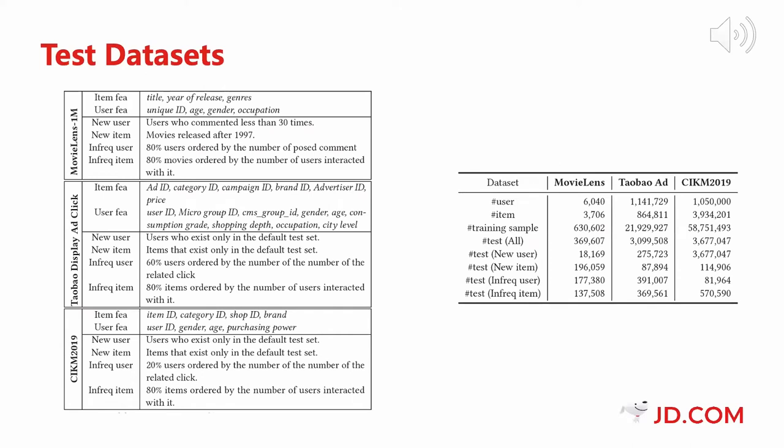Our experiments are conducted on three publicly available datasets. To better evaluate the performance of our VELF to alleviate the cold-start problem, we prepare five different test sets, including randomly sampled test sets, new users, new items, infrequent users, and infrequent items. The corresponding definition for each test set and the statistics of the three datasets can be found in these two tables.